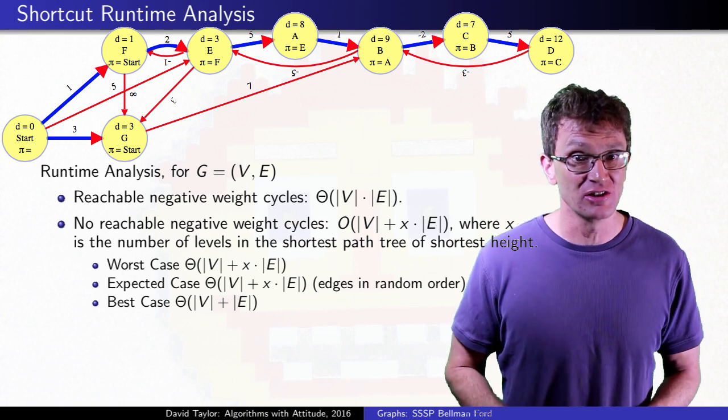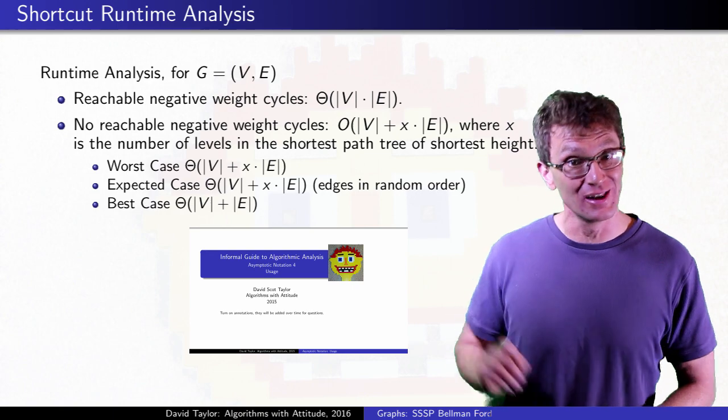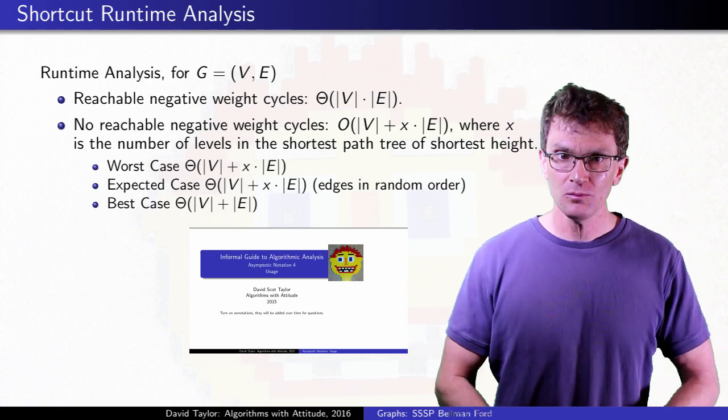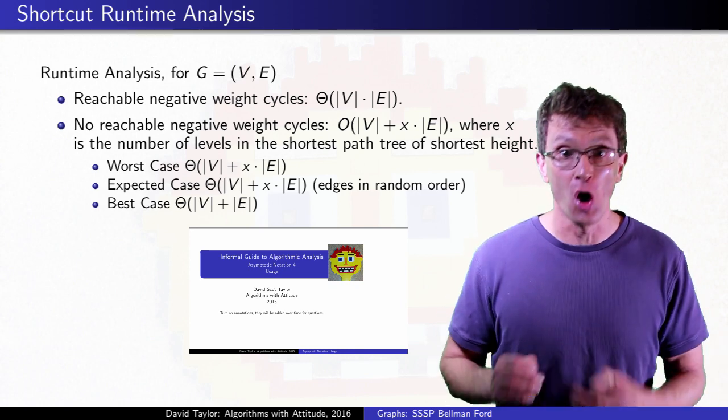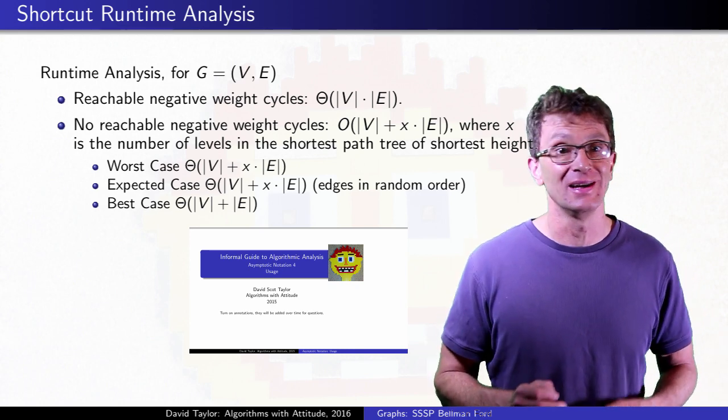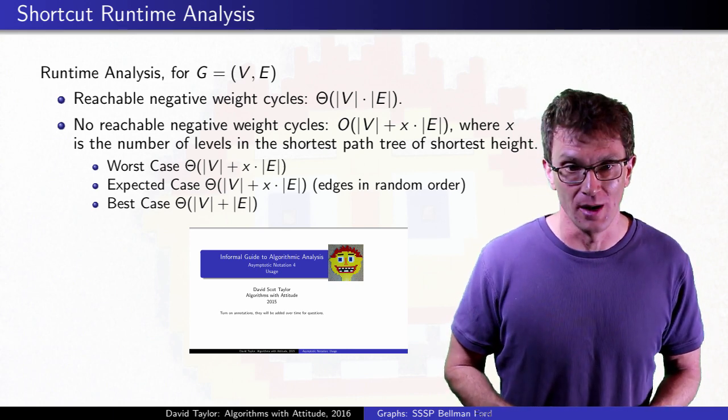But we can use theta for best and worst case analysis. If that distinction still doesn't make sense, the asymptotic notation usage video in this playlist might help. With the random edge ordering, we expect to get an average of two or fewer levels from an arbitrary shortest path tree completed each round, so our expected time looks similar to our worst case time.